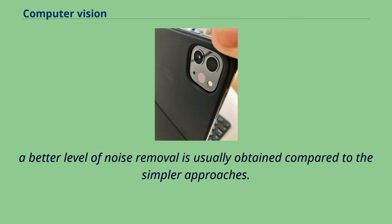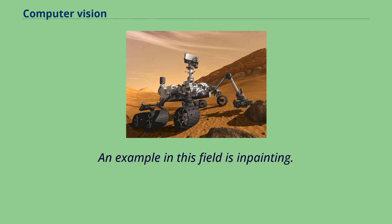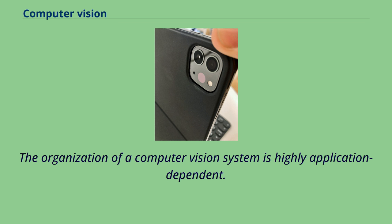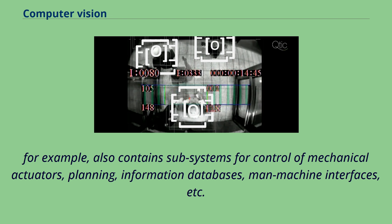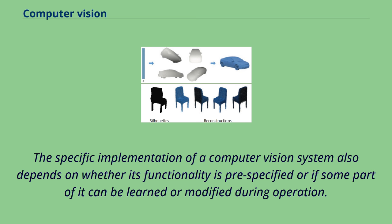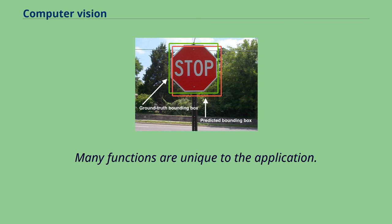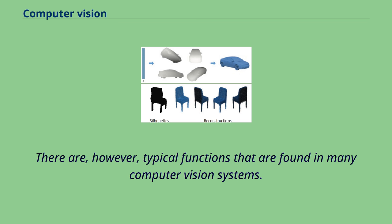The organization of a computer vision system is highly application dependent. Some systems are standalone applications that solve a specific measurement or detection problem, while others constitute a subsystem of a larger design which also contains subsystems for control of mechanical actuators, planning, information databases, man-machine interfaces, etc. The specific implementation also depends on whether its functionality is pre-specified or if some part of it can be learned or modified during operation. Image understanding systems include three levels of abstraction: low level includes image primitives such as edges, texture elements, or regions; intermediate level includes boundaries, surfaces and volumes; and high level includes objects, scenes, or events.